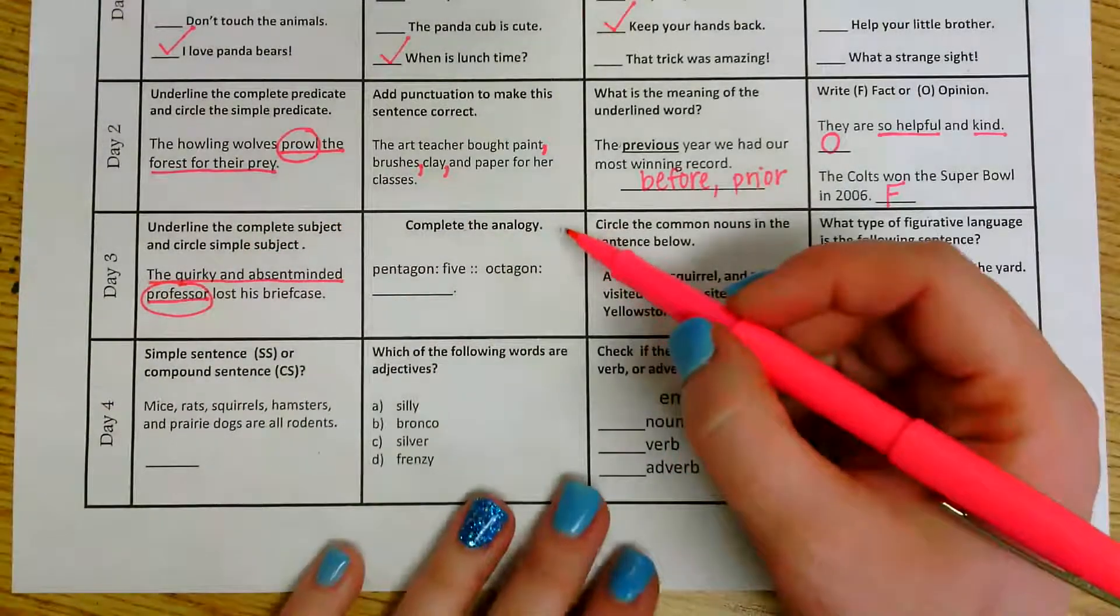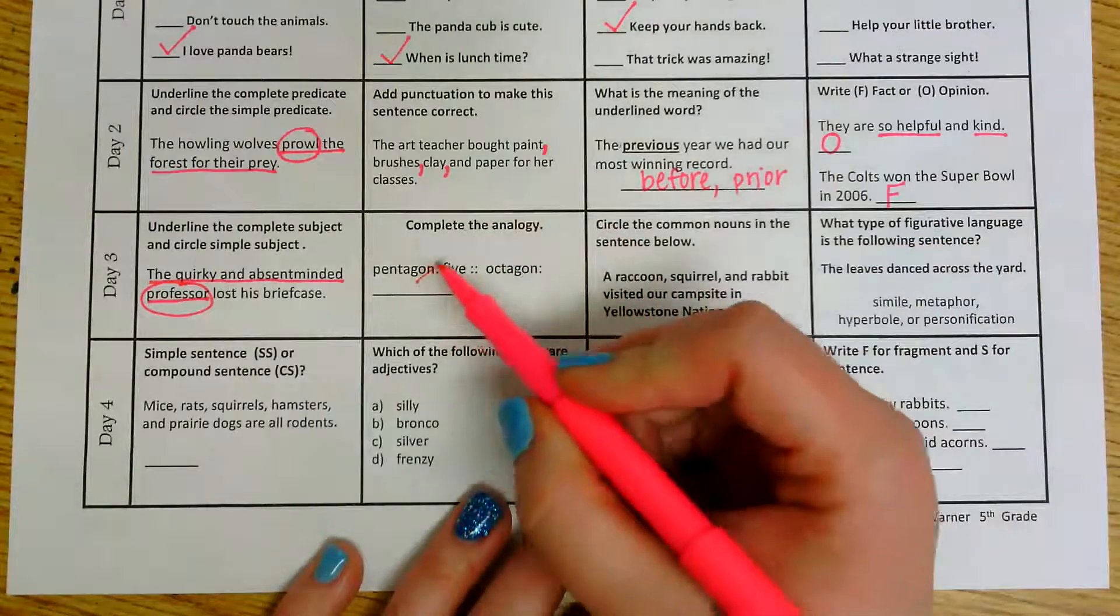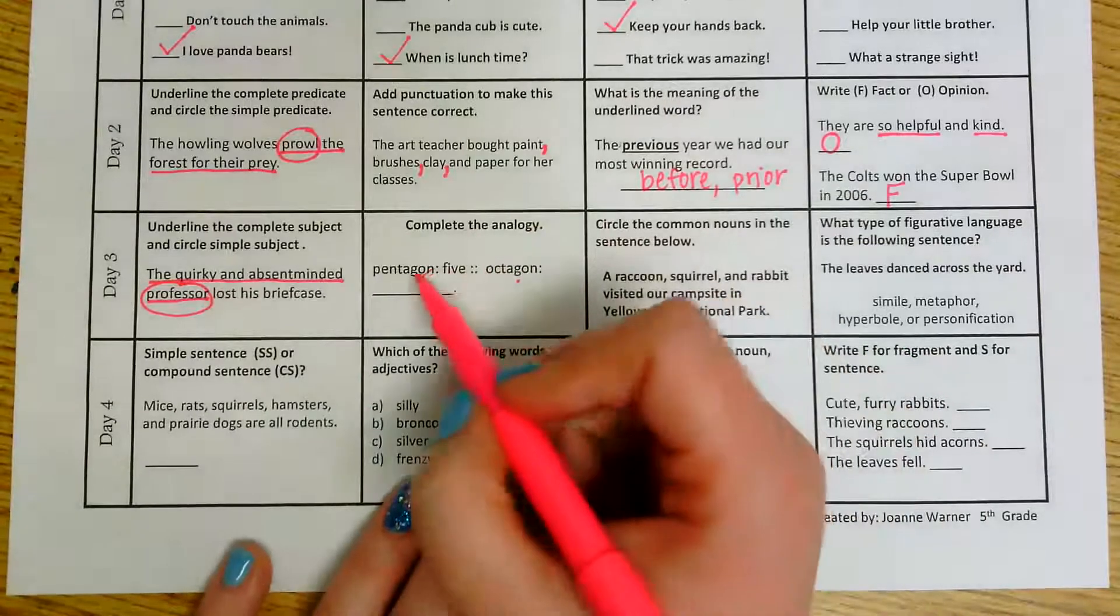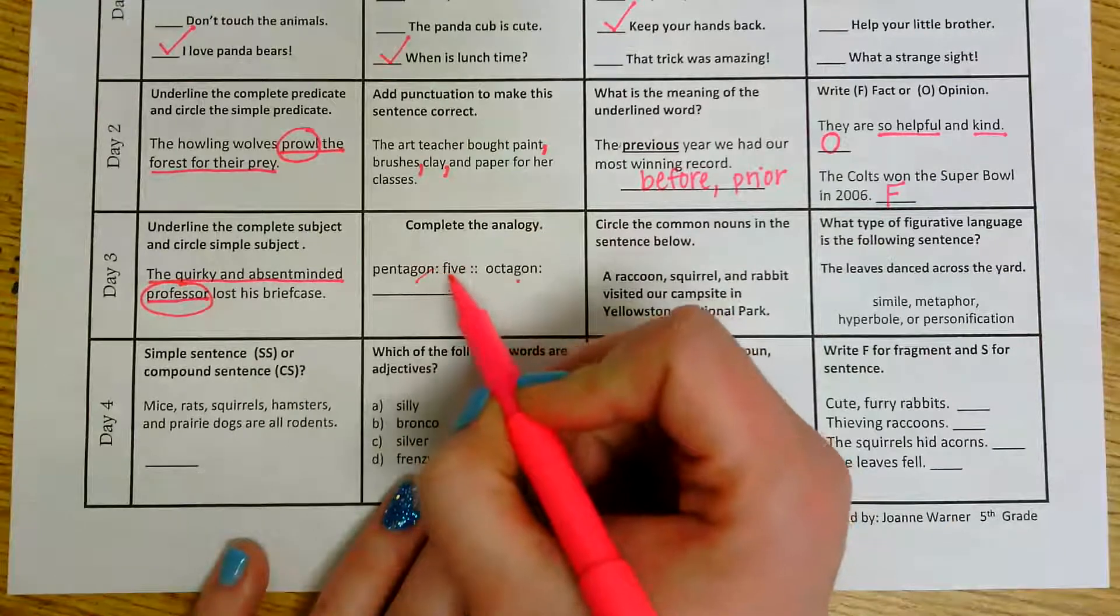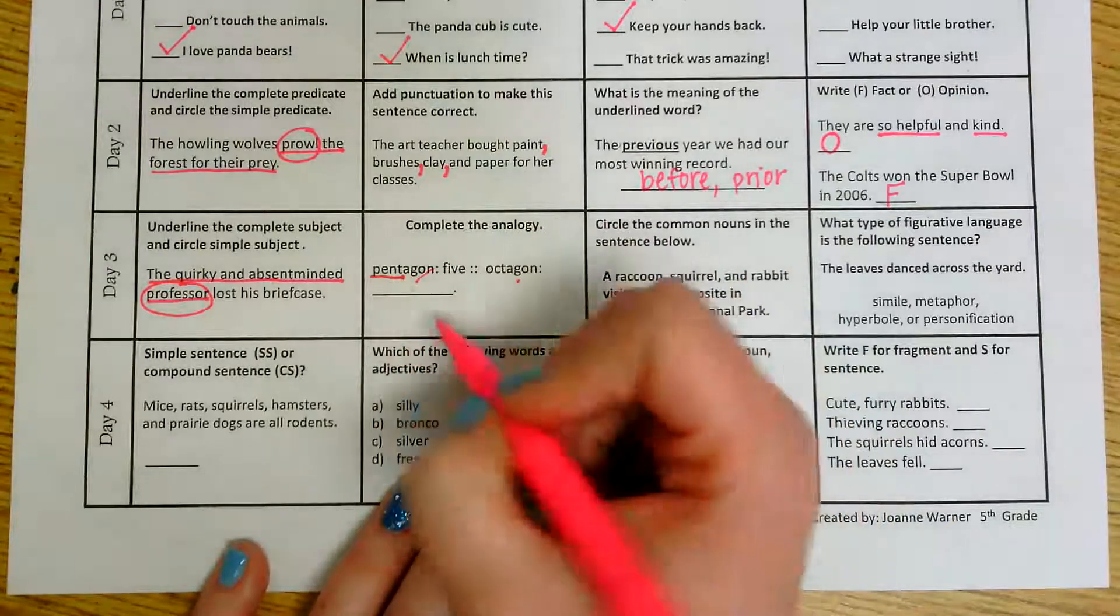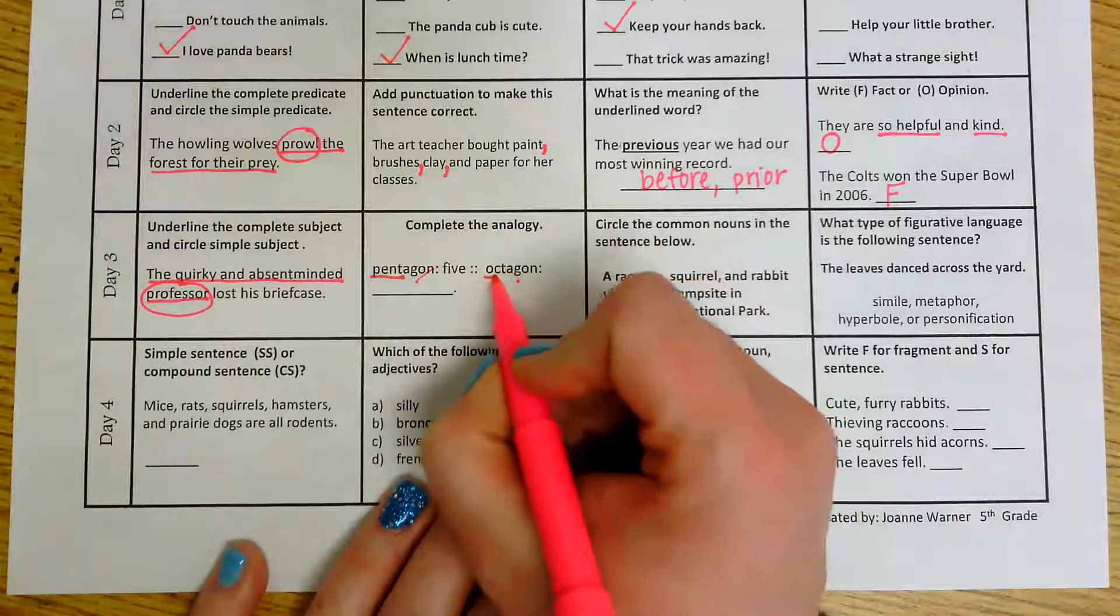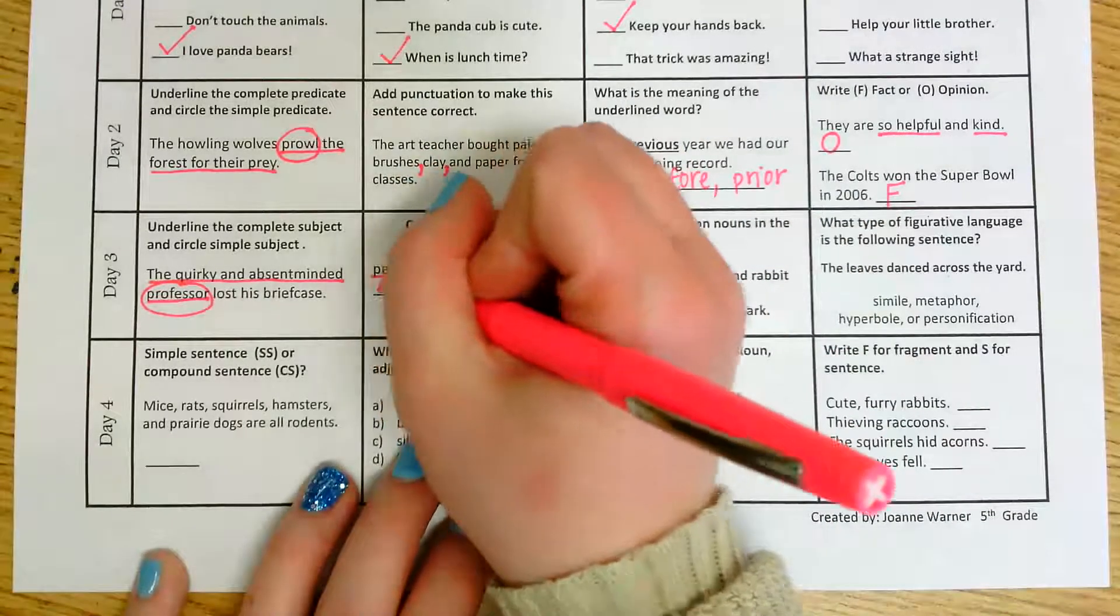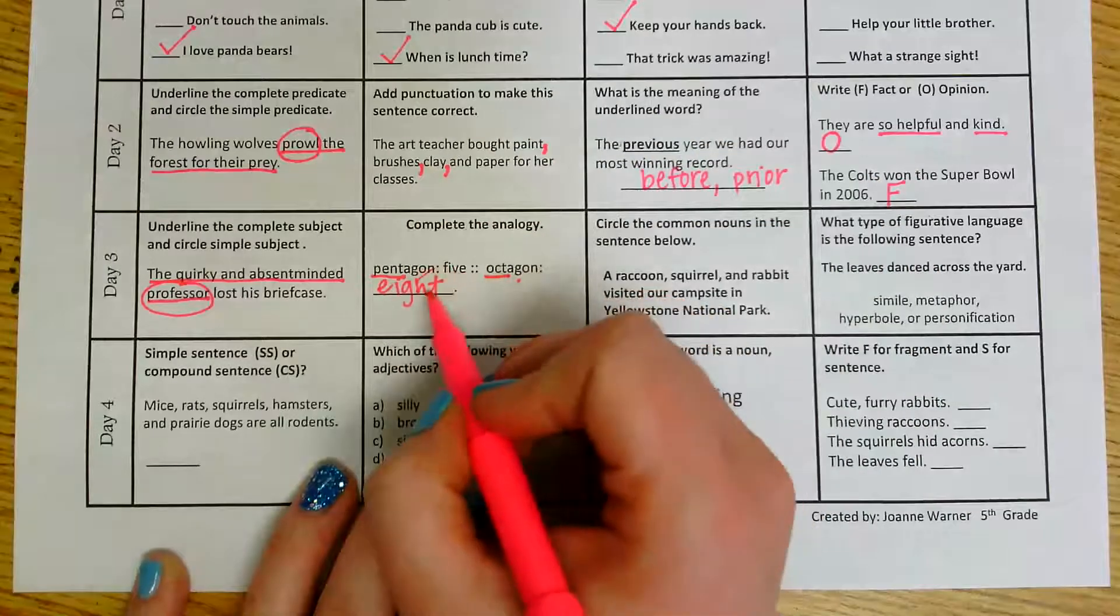The next one is an analogy which we should be very familiar with. So we have pentagon is to five, octagon is to blank. Well, I know that a pentagon has five sides because I have this root right here, pent means five. So if I look at octagon, the root oct means eight. It has eight sides. So pentagon is to five, octagon is to eight.